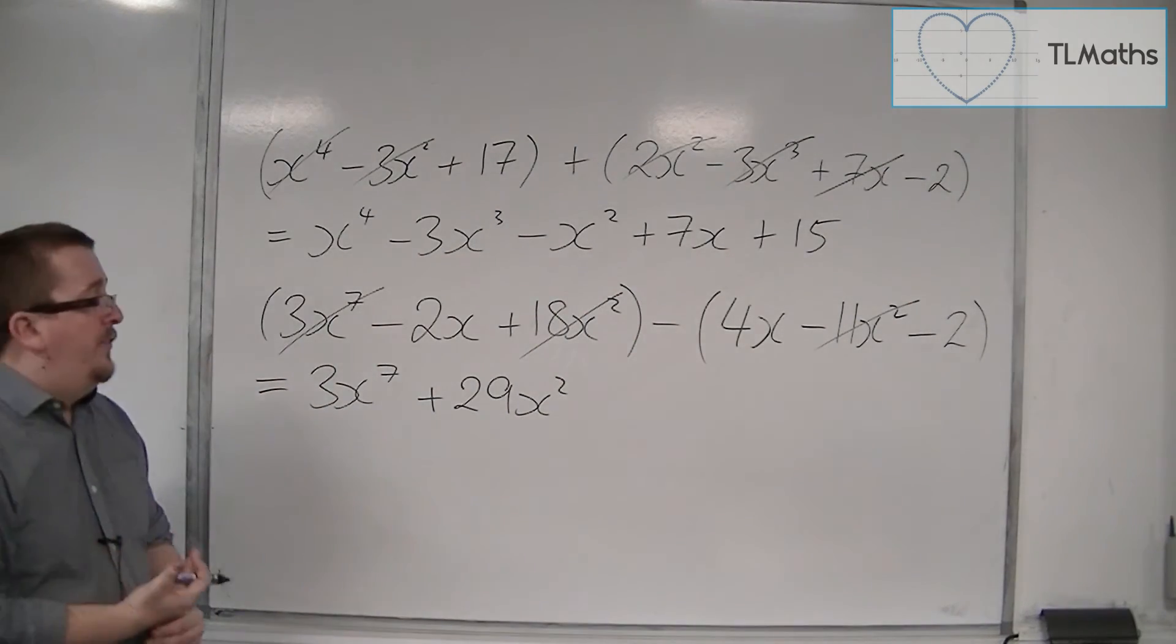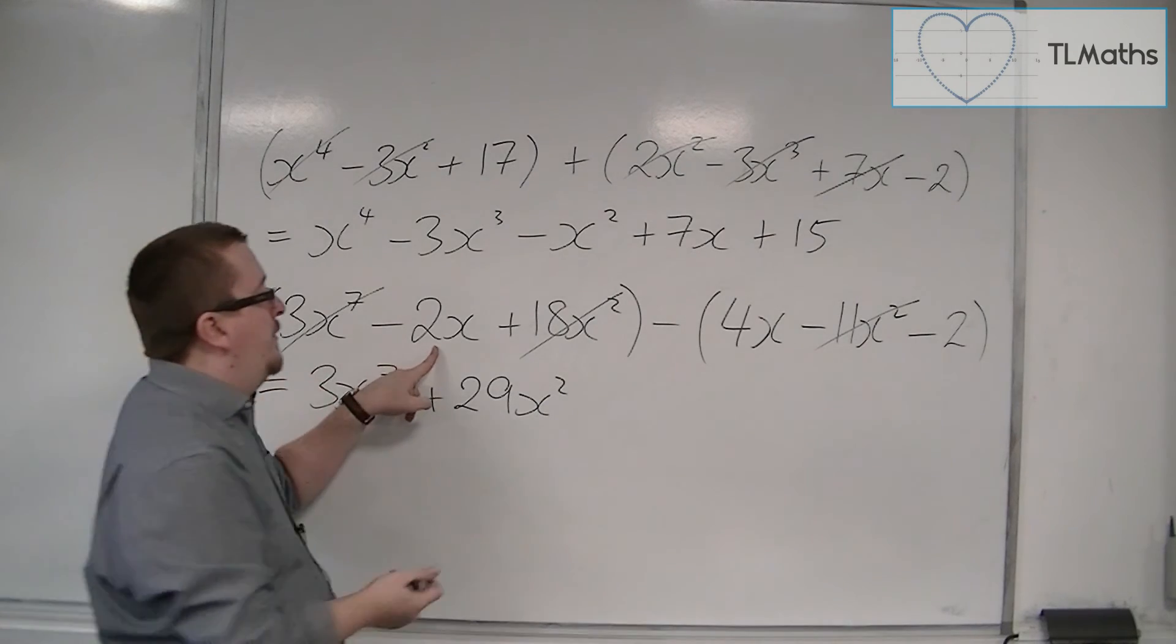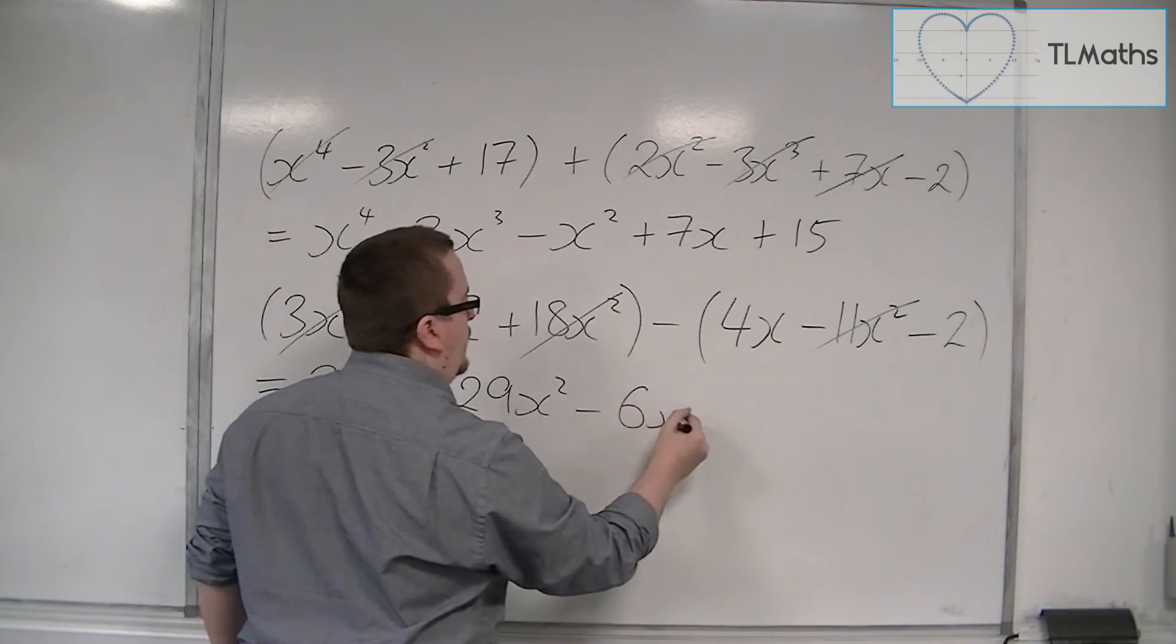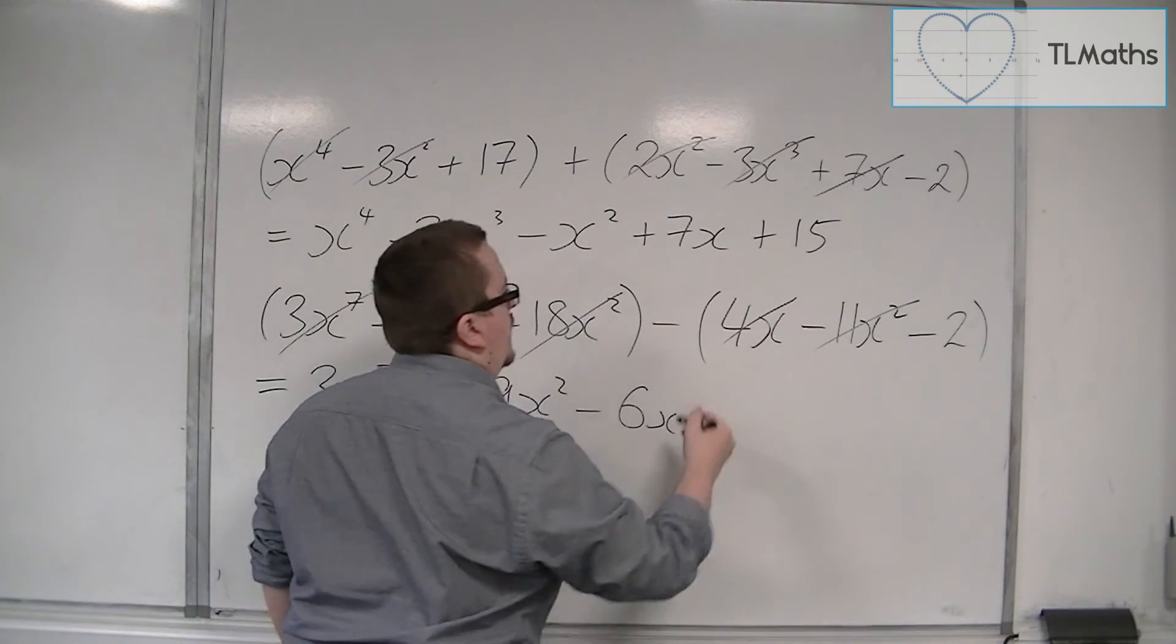Then look for x's, singular x's. We've got minus 2x, take away 4x. So that's minus 6x. Get rid of those.